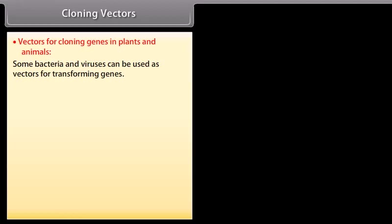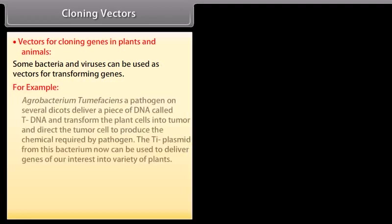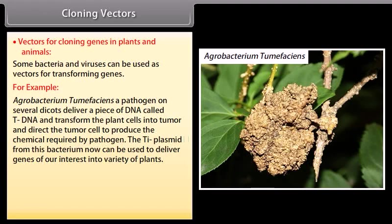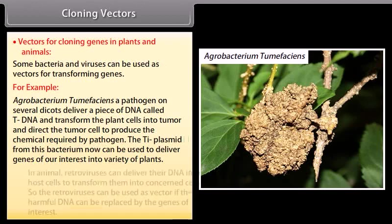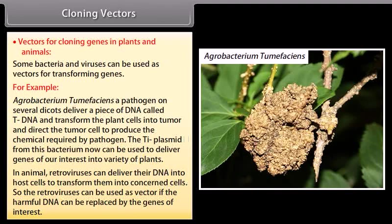Vectors for cloning genes in plants and animals: Some bacteria and viruses can be used as vectors for transforming genes. For example, Agrobacterium tumefaciens, a pathogen on several dicots, delivers a piece of DNA called T-DNA and transforms the plant cells into tumor, directing the tumor cell to produce chemicals required by the pathogen. The Ti-plasmid from this bacterium can be used to deliver genes of interest into a variety of plants. In animals, retroviruses can deliver their DNA into host cells to transform them. Retroviruses can be used as vectors if the harmful DNA is replaced by the genes of interest.